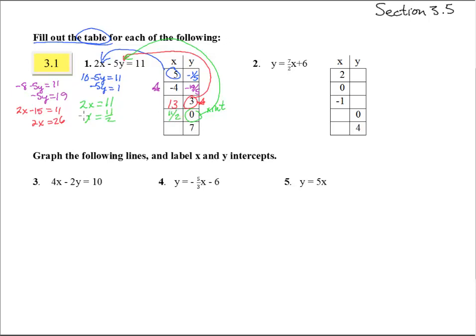And we stick 7 in for y, and we get 2x minus 35 equals 11. Add 35 and we get 2x equals 46. And divide both sides by 2 and we get x equals 23.